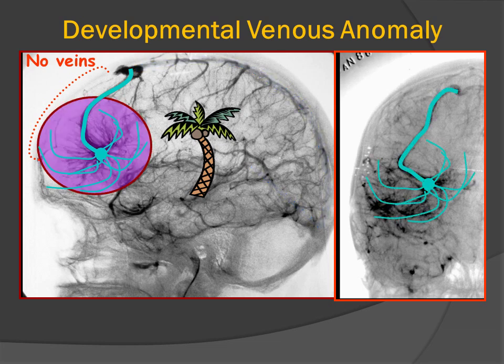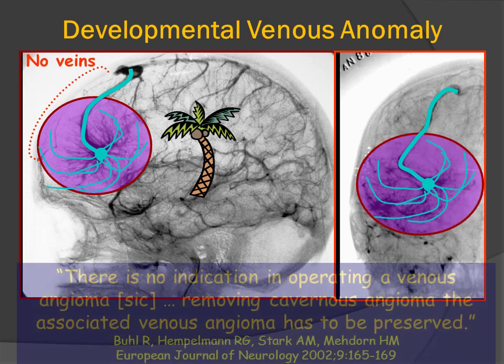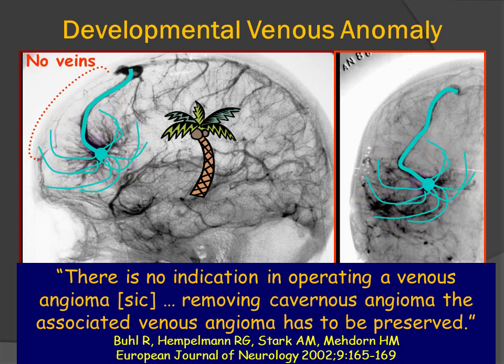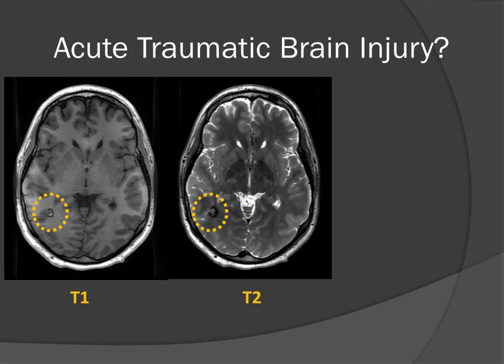It's important to remember that this is the only venous drainage for a very large volume of brain tissue. This is why the neurosurgical literature is replete with references to preserving the dominant transcortical trunk rather than resecting it, even when there is a hemorrhage or an associated cerebral cavernous malformation.